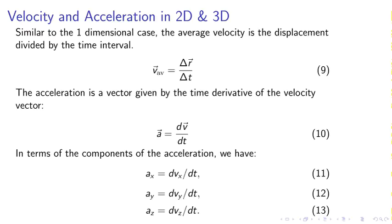You can have average velocity which is related to the displacement vector. The acceleration vector is given by the time derivative of the velocity vector. In terms of the components of the acceleration, ax equals dvx/dt, ay equals dvy/dt, and so forth.